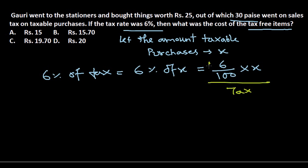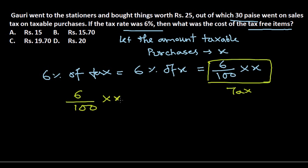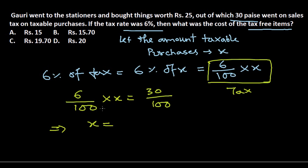This is the rate of the tax. Let us convert 30 paise to rupees — 30 paise divided by 100 equals rupees 0.30. So the equation is: (6/100) × X = 0.30.